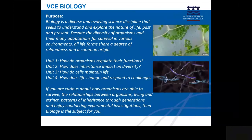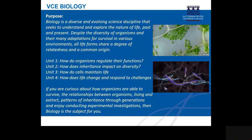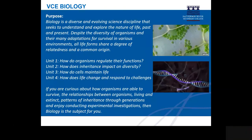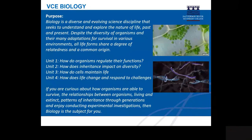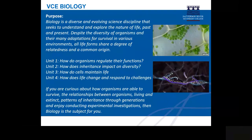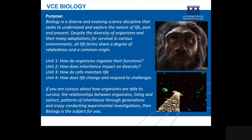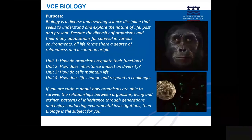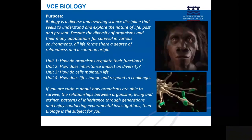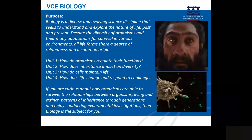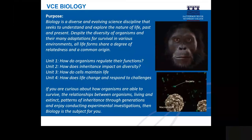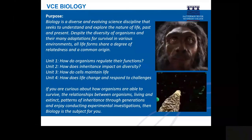In Unit 3, students delve deeper into cellular processes, exploring how the genetic code provides instructions for the synthesis of proteins, and examine the processes and consequences of manipulating the DNA molecule. In Unit 4, they learn how organisms respond to pathogens and acquire immunity. They explore the changes to genetic material over time and the evidence for biological evolution, including human change over time.